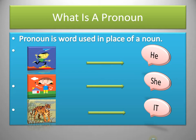A pronoun is a word used in place of a noun. For example, here's a picture of a boy and we can refer to him as 'he'. We can also refer to a girl as 'she', and to an animal — say, for example, this tiger — as 'it'.